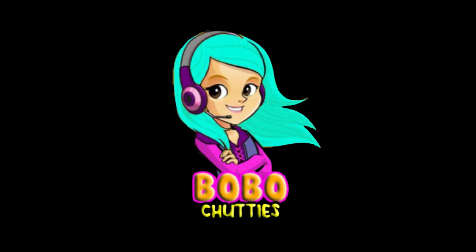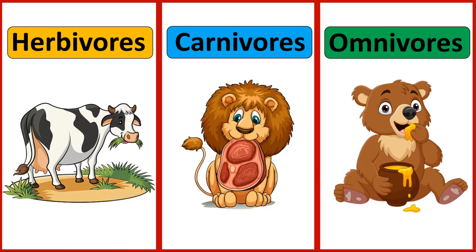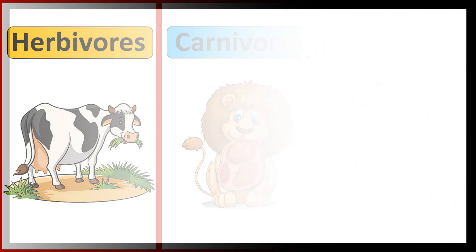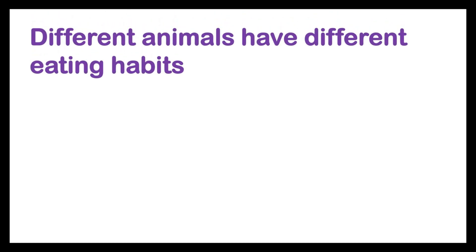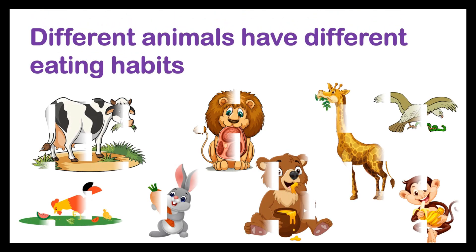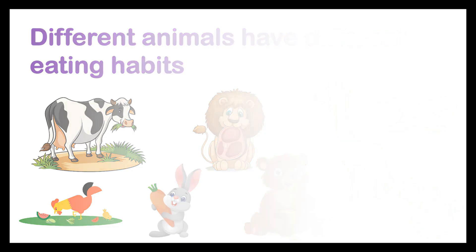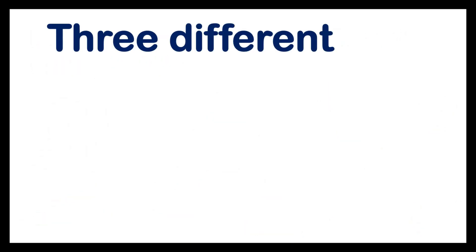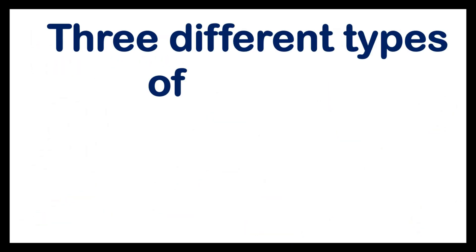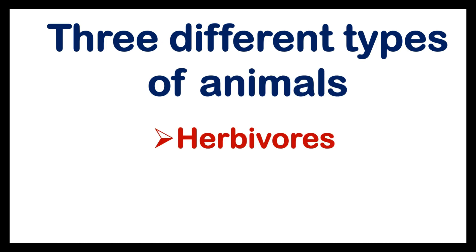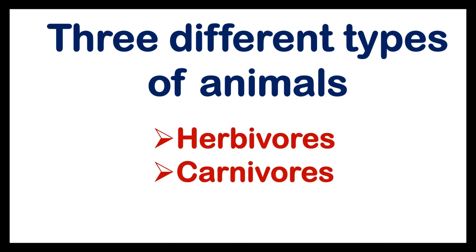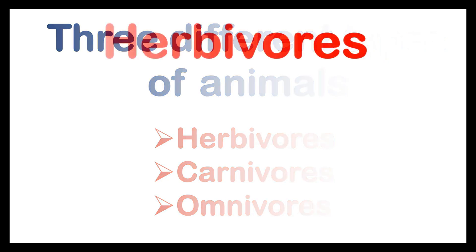Bobo Chuttees Kids, we are going to see Herbivorous, Carnivorous and Omnivorous. Different animals have different eating habits. Three different types of animals: Herbivorous, Carnivorous, Omnivorous.